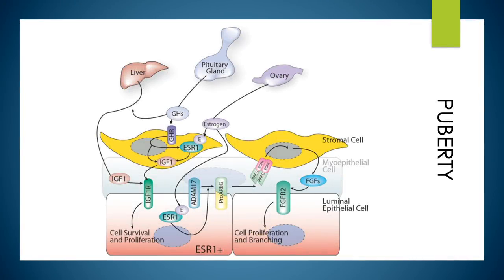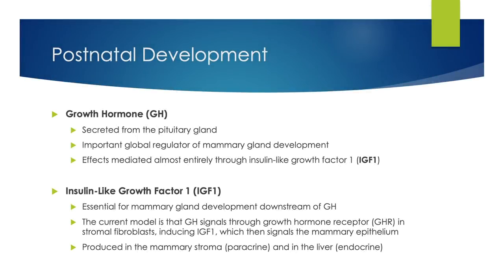Studies performed as early as the 1930s demonstrated that extracts from the pituitary gland regulate mammary gland formation, with researchers observing enhanced mammogenesis and lactogenesis upon its administration. Two hormones were identified: growth hormone and prolactin. Later studies showed that mammary pubertal development was disrupted in mice lacking growth hormone, insulin-like growth factor 1, or estrogen receptor alpha — genes that mediate pathways regulating ductal outgrowth and morphogenesis. In contrast, development of the adolescent gland occurs normally in mice lacking prolactin or progesterone receptors. Growth hormone, secreted from the pituitary gland, is an important global regulator, and its effects are mediated almost entirely through insulin-like growth factor 1.